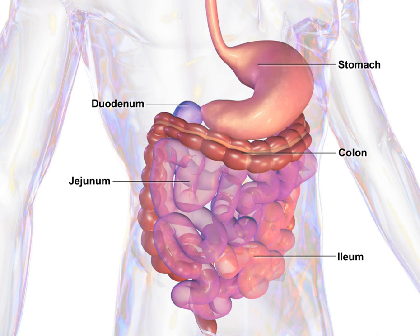The duodenum contains Brunner's glands which produce a mucus-rich alkaline secretion containing bicarbonate. These secretions, in combination with bicarbonate from the pancreas, neutralize the stomach acids contained in the chyme. The jejunum is the midsection of the small intestine, connecting the duodenum to the ileum. It is about 2.5 metres long and contains the circular folds, also known as plicae circulares, and villi that increase its surface area. Products of digestion — sugars, amino acids, and fatty acids — are absorbed into the bloodstream here.